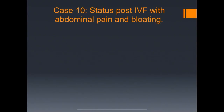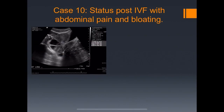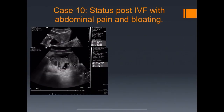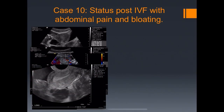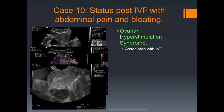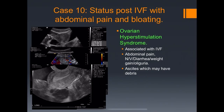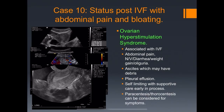Case ten: status post-IVF with abdominal pain and bloating. The right and left adnexa are enlarged with multiple cysts and flow present. A global pelvic view shows ascites with low-level echoes, possibly hemorrhage. This is typical of ovarian hyperstimulation syndrome associated with IVF. Symptoms include abdominal pain, nausea, vomiting, diarrhea, weight gain, oliguria, and shortness of breath. They develop ascites with debris and pleural effusions. It's usually self-limiting with supportive care; occasionally paracentesis or thoracentesis may be performed.